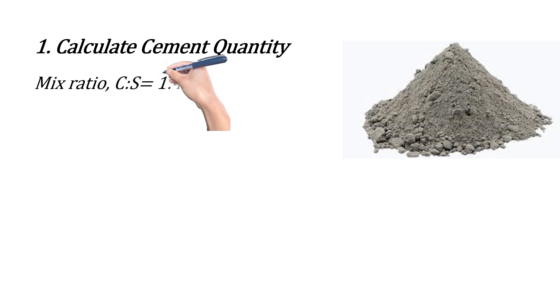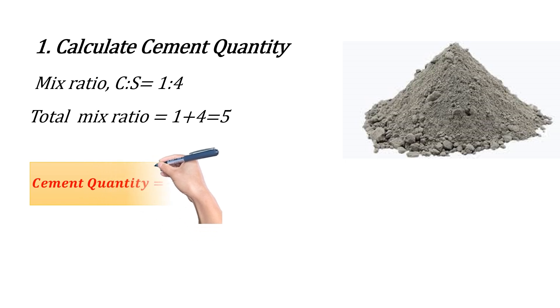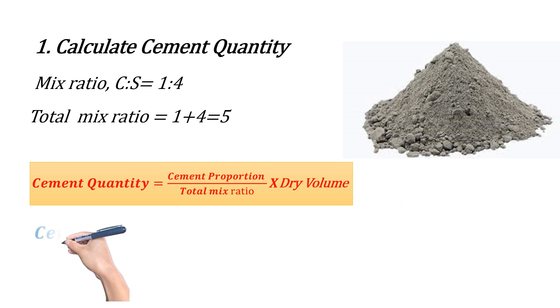To determine the cement quantity, let's first calculate the total mix ratio: 1 plus 4 equals 5. The quantity of cement is then calculated as cement proportion divided by total mix ratio into dry volume, which equals 1 by 5 times 1.596.